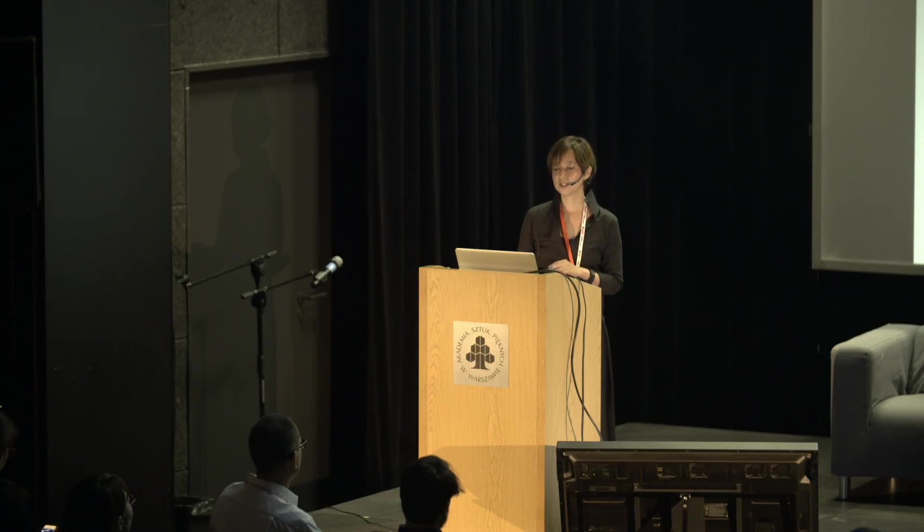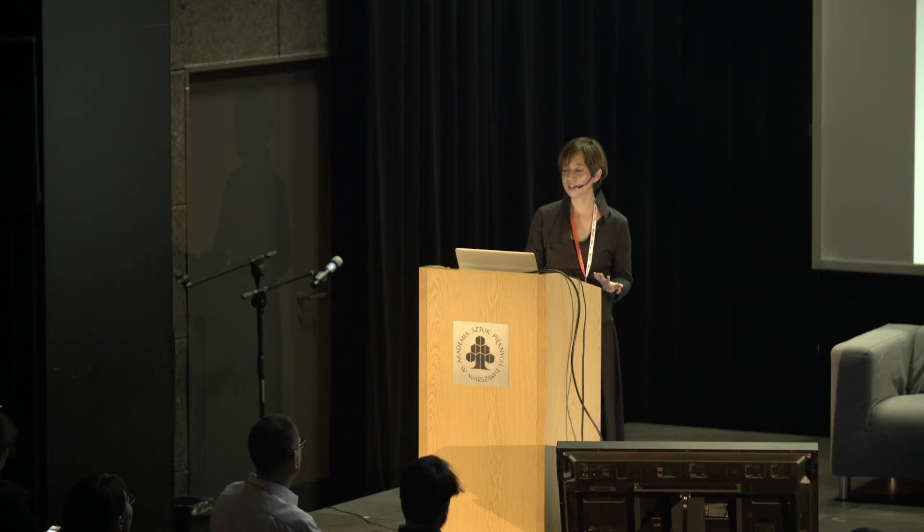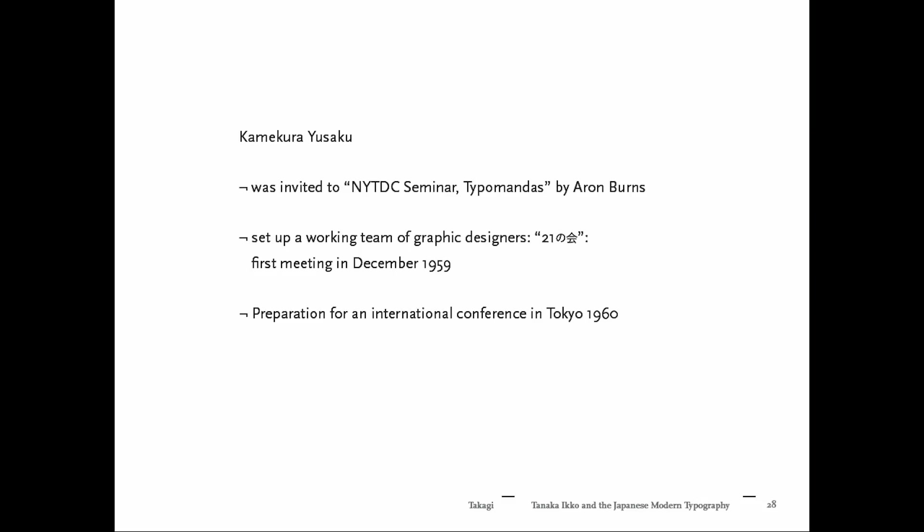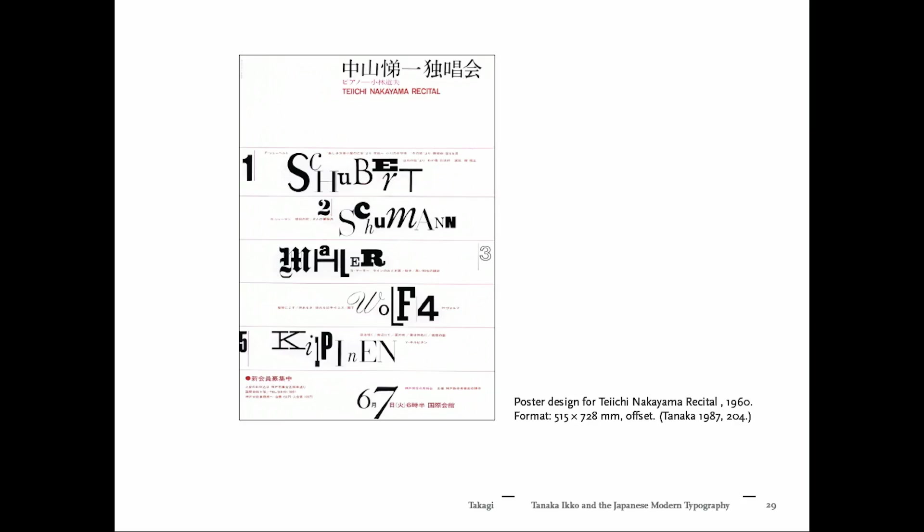In a newspaper cutout found at the CCGA archive, his work is already described as a modern interpretation of Japanese atmosphere in design, and Tanaka himself is saying he wants to give an impact to Japanese design. Another important moment came when Kamikura Yusaku returned from New York, set up a working group of designers across generations, and gave a sharing session showing all the works he brought back — among them works by Herb Lubalin and Lou Dorfsman — which again opened up Tanaka's view.